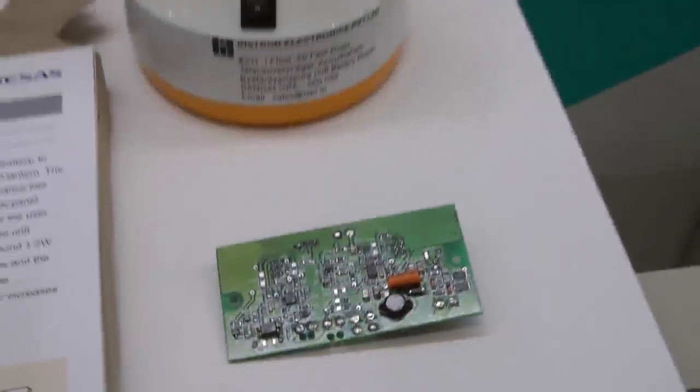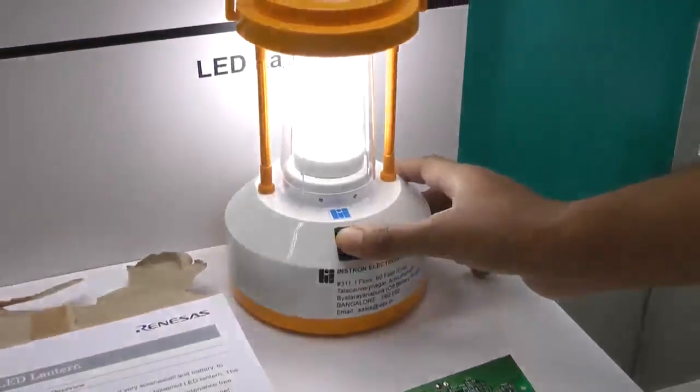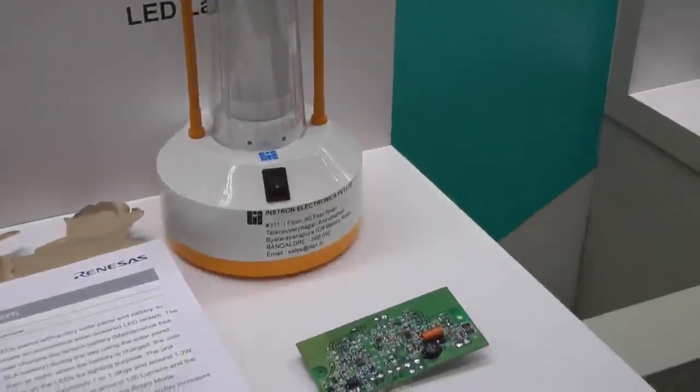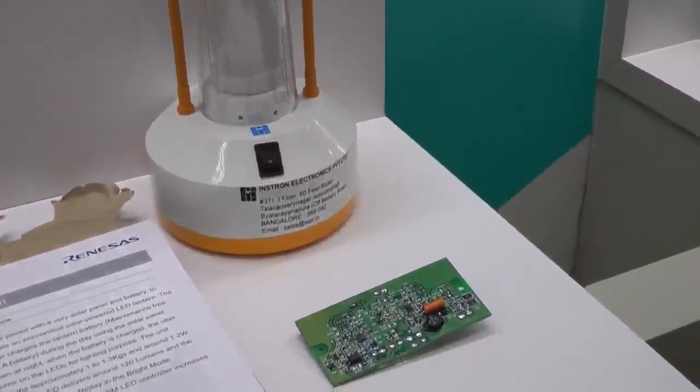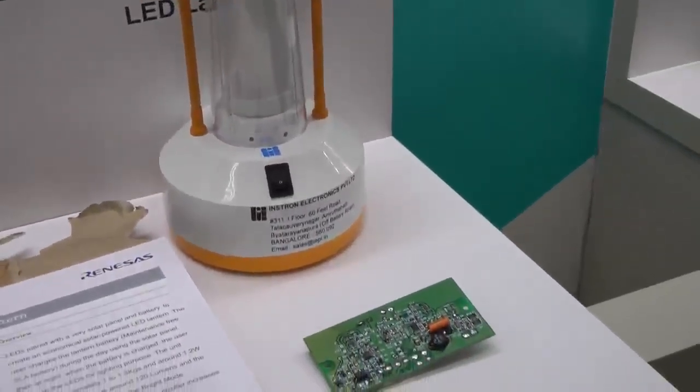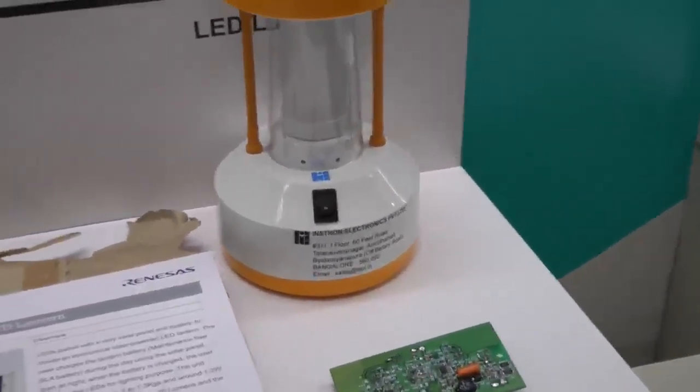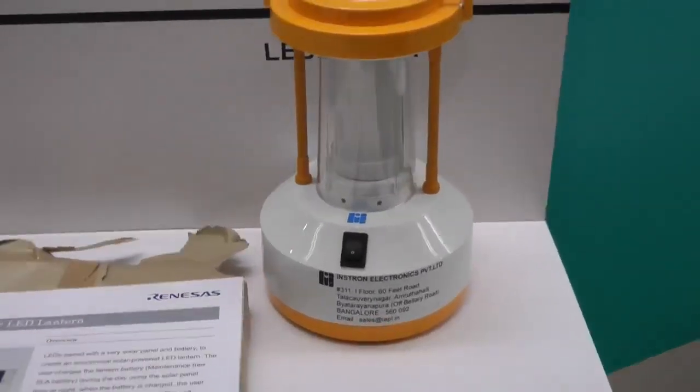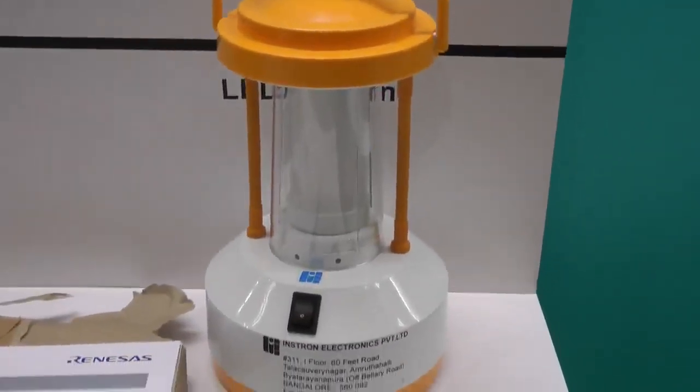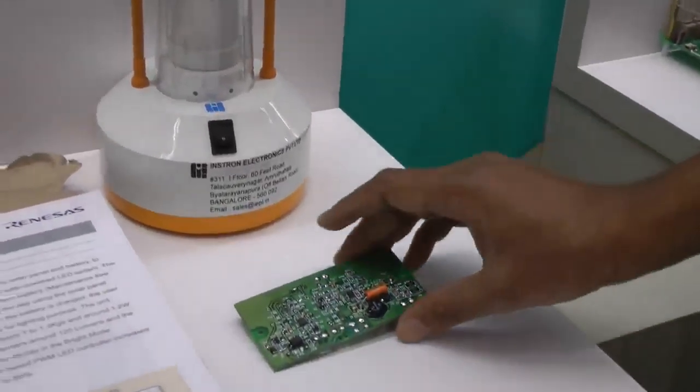Following are the features of solar LED lantern card: light dimmable through a switch with 3 levels, input reverse voltage battery protection, output momentary short circuit protection, low idle current, chargeable through solar panel, and low battery indication and charging indication. These are the features provided for the solar LED lantern card.